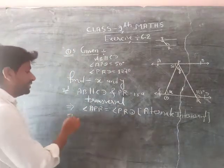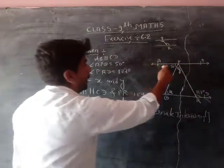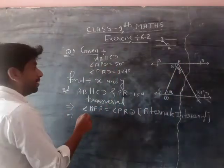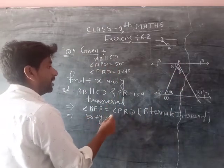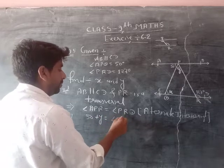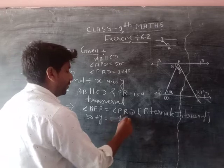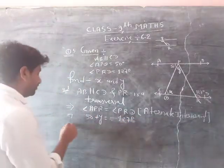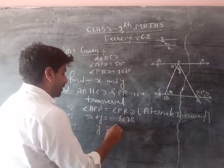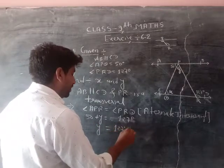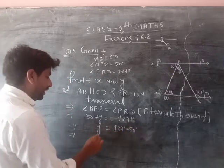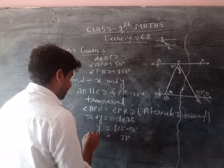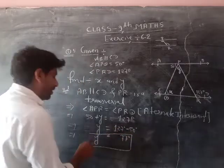Then you can see sir, APR. If you have APR, that means 50 plus y equals to angle PRD. PRD, we have 127 degrees. Then y equals to 127 degrees minus 50 degrees. Then we get 127 minus 50 is 77. Y's value is 77.